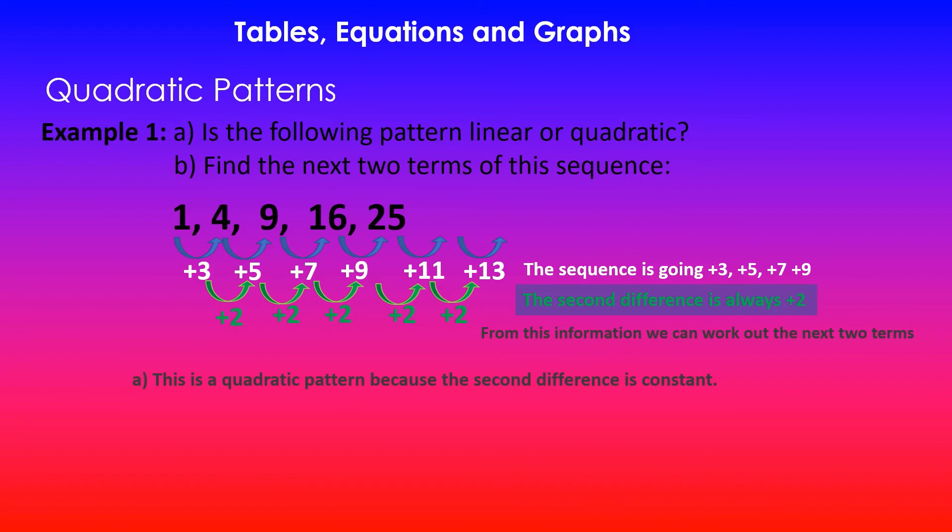The answer to the first part of the problem: this is a quadratic pattern because the second difference is constant, and in this case it is always going up by plus 2. The next two terms of the sequence are 36 and 49, as you can see over here.